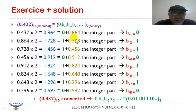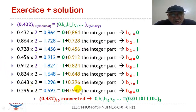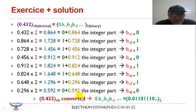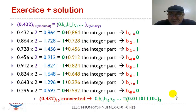We take the fractional part of this result and multiply it by 2, and so on. We can stop when the desired precision is reached. Here we continue up to B minus 8, which is equal to 0. The final result: this fractional decimal number converted to binary system gives this result.